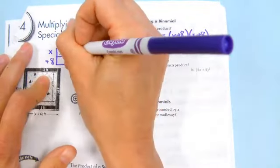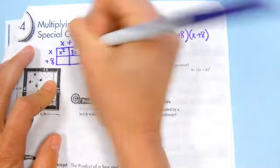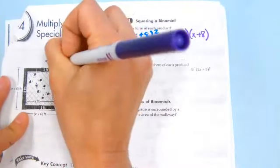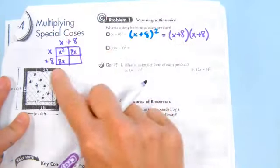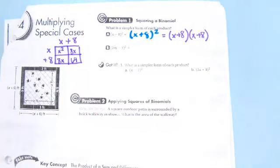If I do that, I get x times x, which is x squared. Then I get x times 8, which would be 8x. Then I get 8 times x, which again would be 8x. And then I get 8 times 8, which would be 64.